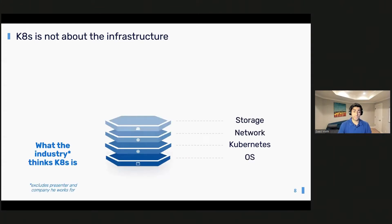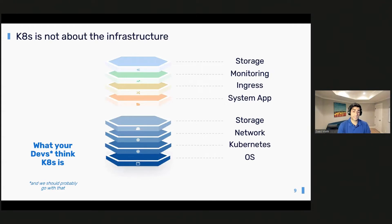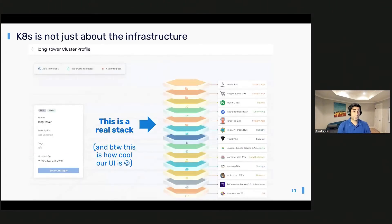If you ask the industry and the vendors, they'll tell you that Kubernetes itself is four different layers: the operating system, Kubernetes itself, the networking layer, and the storage layer. But what we believe is that the reality of Kubernetes is the total value and experience that a complete Kubernetes stack provides. This is what your developers think of — everything deployed inside it. On average, customers deploy 12 to 15 different integrations in any one cluster: logging, monitoring, ingress, security, secret manager — there are just so many different layers of technology you have to add to make Kubernetes real.